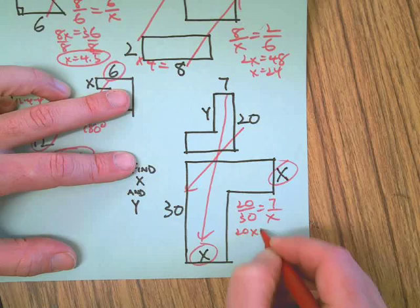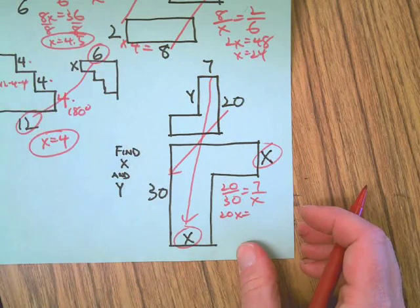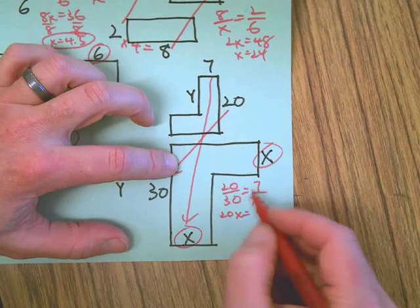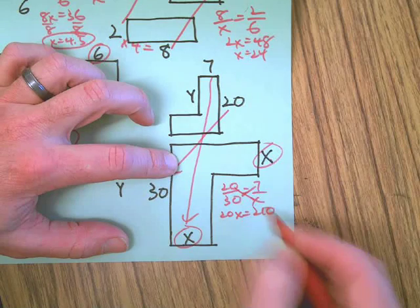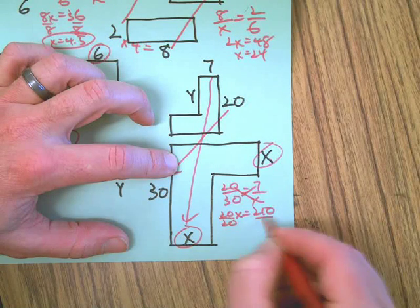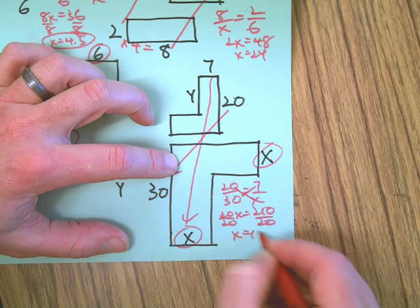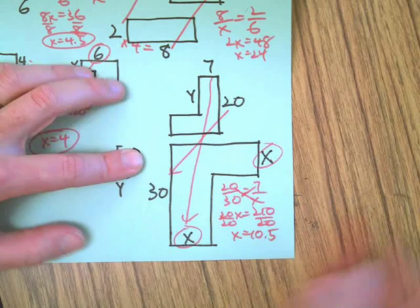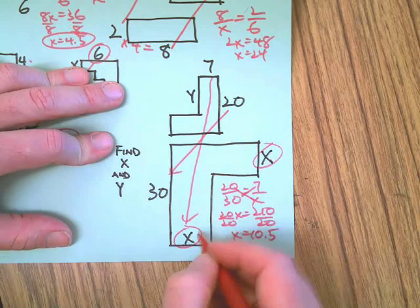20X equals 210. Divide both sides by 20. X equals 10.5. So if X equals 10.5, then if I find this, that will be Y.